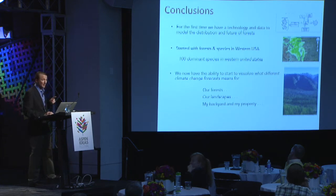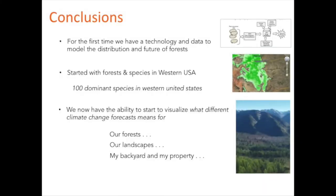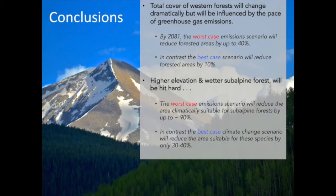To conclude: for the first time, we've been able to tap into the vast amount of botanical and forestry data that exists throughout the globe. We now have the technology and the data to not only integrate them, but begin to visualize and bring climate change forecasts to a personal level — forecasting what your view shed, your landscape, your backyard may look like under these different climate change scenarios. We started with forests and tree species in the western United States as a proof of concept with about a hundred different species. We now have the ability to dramatically scale this up — to visualize what different climate change forecasts mean not only for our forests in the western US, but on continental and also planetary scales.